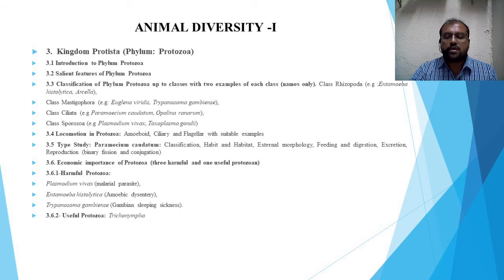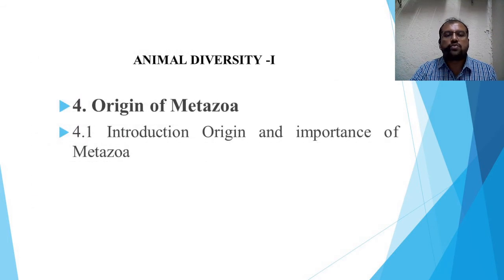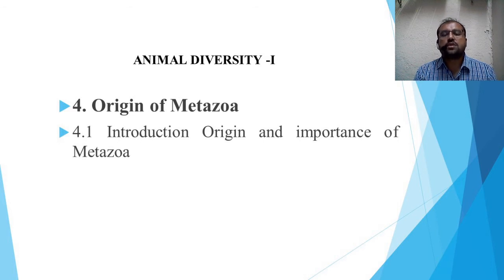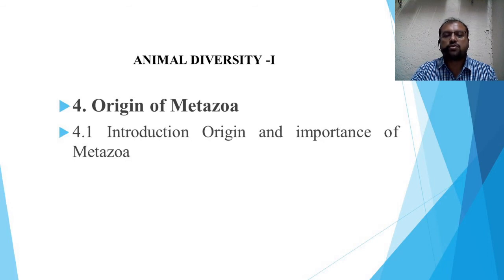The fourth topic is origin of Metazoa. It includes the introduction, origin, and importance of Metazoa — that is, multicellular animals. The protozoans we have studied are unicellular; now the next group that arises is Metazoa or multicellular animals, which we are going to deal with in the fourth topic.